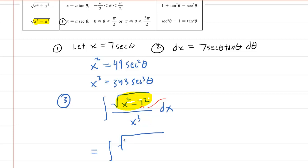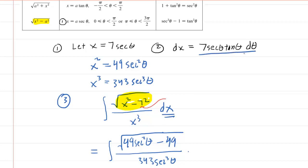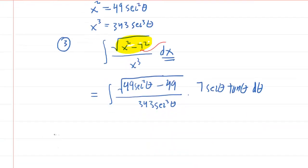We will now make our strategic substitutions. The numerator under the square root becomes 49 secant squared of theta minus 49, all divided by x cubed, which is 343 secant cubed of theta, times dx. Don't forget that dx was derived as 7 secant of theta tangent of theta d theta. That is your expression, and believe it or not, once we simplify it, we will achieve a simpler integral.